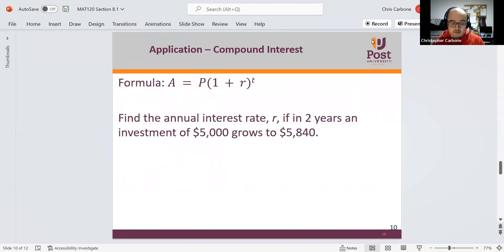So an application of this is with compound interest. A equals P times 1 plus r to the t power. This is for the annual interest rate. We want to find the annual interest rate r if, in two years, an investment of $5,000 grows to $5,840.